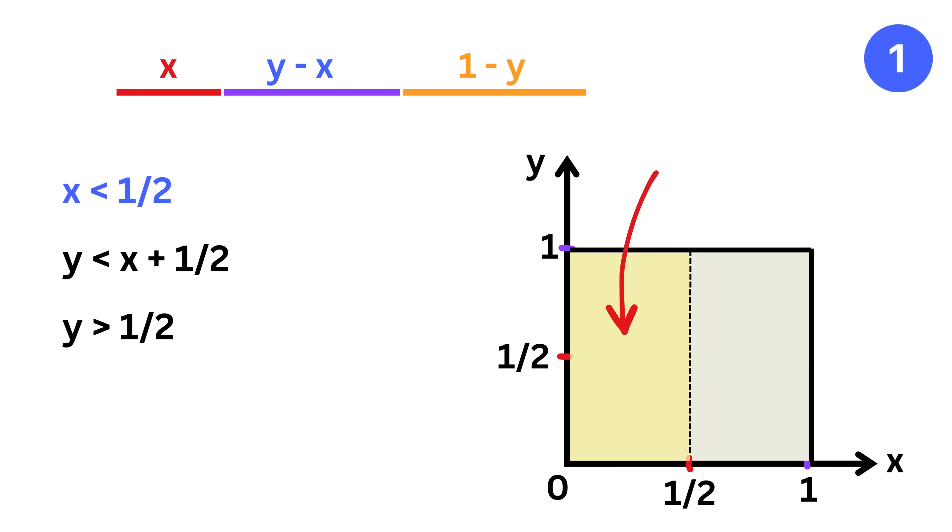Then this part corresponds to y greater than half but less than one. So their common intersection is this region. Now inside this region, we need to find the region that corresponds to y less than x plus half.